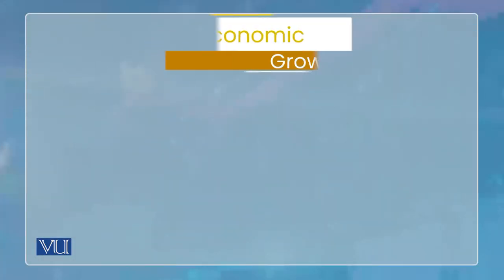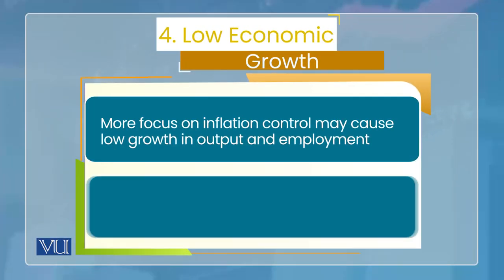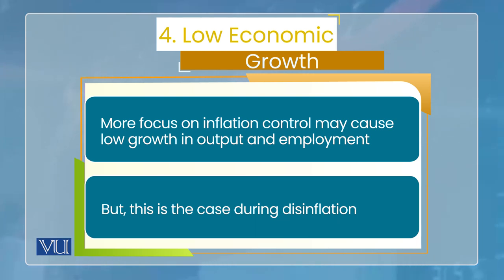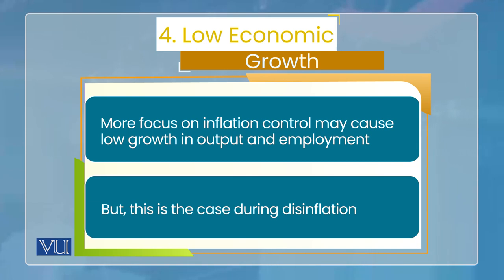ہمارا چوتھا ڈیس ایڈوانٹیج ہے لو اکنامک گروتھ۔ یہ ایشو پاکستان جیسے ملک کے لیے بڑا ضروری ہے کیونکہ ہم ڈیولپنگ اکانومی ہیں۔ ڈیولپنگ اکانومی کا مطلب ہے کہ ابھی اسے ہائر گروتھ ریٹ اچیو کرنا ہے تاکہ ترقی ہو سکے۔ جب ہم ڈیولپمنٹ پروسس میں ہوں اور اس وقت انفلیشن ٹارگٹنگ اسٹریٹیجی کی وجہ سے اکنامک گروتھ کو ہرٹ کیا جائے، تو یہ ہماری جیسی اکانومی کے لیے اچھا نہیں ہے۔